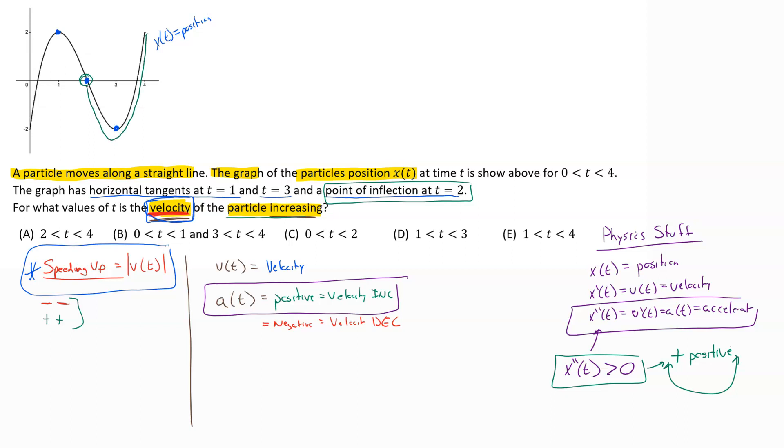So the right answer on this one is where the graph is concave up - that would be from two to four. That is when our velocity of the particle is increasing.